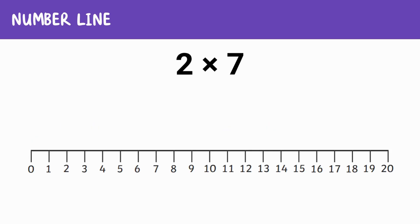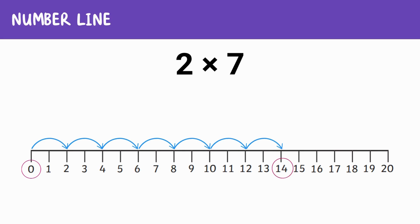Let's try another example. Imagine multiplying two times seven. We can hop by two seven times: one, two, three, four, five, six, seven hops. Where do we land? On 14. So two times seven equals 14.